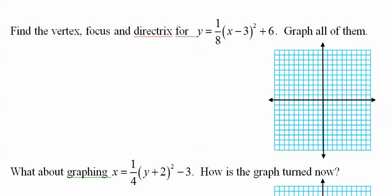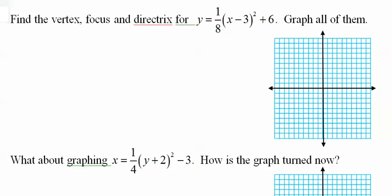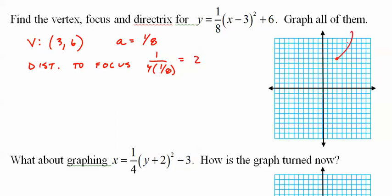So let's just blast out problems. You're going to want to use the pause button because I'm going to go through these very, very quickly, just in the interest of time. Vertex at 3, 6. Goes up. A equals 1 eighth. The distance to the focus, 1 over 4 times 1 eighth. A lot of people struggle with that algebra. That's 2. Since I know it kind of goes up, you go up 2 to get there. You go down 2 to get to the directrix.